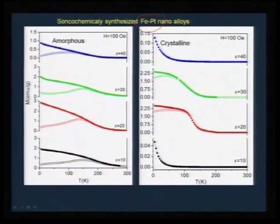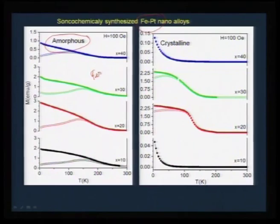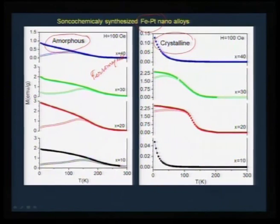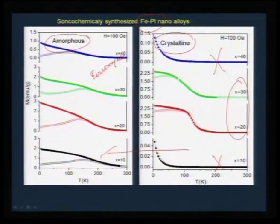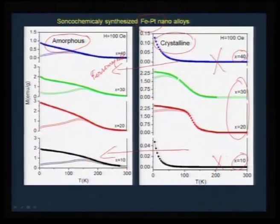Compounds prepared using ultrasound are all nano in size and show anomalous behavior compared to bulk oxides or alloys. For example, FePt nano-alloys as prepared are all amorphous, and the M vs. T curve shows all compositions are ferromagnetic. Whereas when you sinter these alloys and they become crystalline, only certain compositions retain magnetism. Even compositions that should not be magnetic according to the order-disorder parameter turn out to be magnetic in nano phase — and this is possible through a sonochemical approach.